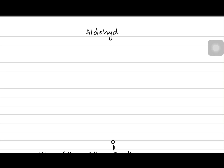In today's video, we'll introduce the concept of aldehydes and ketones. Aldehydes and ketones both have the same functional group, which is carbonyl. The carbonyl functional group is a carbon double-bonded to oxygen. It's very similar in appearance to the carboxylic acid functional group but does not have the OH. Aldehydes have the carbonyl functional group at the corner, with a hydrogen on one side and a carbon chain on the other side.